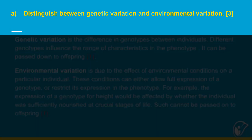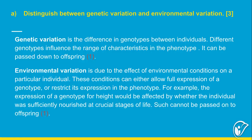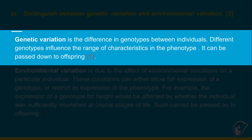Distinguish between genetic variation and environmental variation — show the differences as well as similarities. Genetic variation is the difference in genotypes between individuals. Different genotypes influence the range of characteristics in the phenotype. It can be passed down to offspring. Simply, it is variation based on whatever you have in your genes.